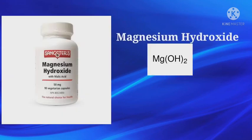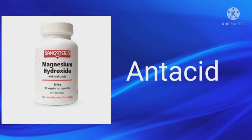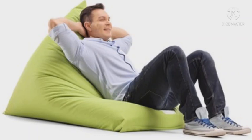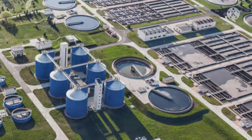Magnesium hydroxide. It is also known as milk of magnesia. It is a wonderful antacid that helps in neutralizing excess acidity in the stomach and we get relief from indigestion or acidity. It is also used in wastewater treatment plants to neutralize the acid effect in water.